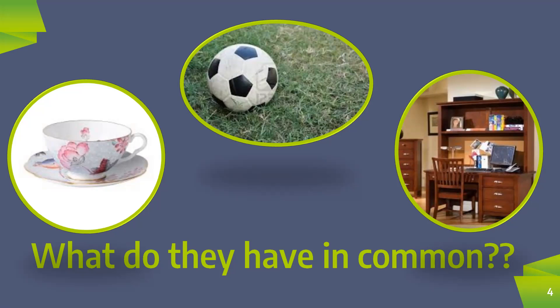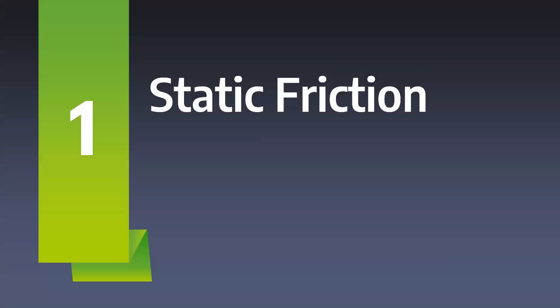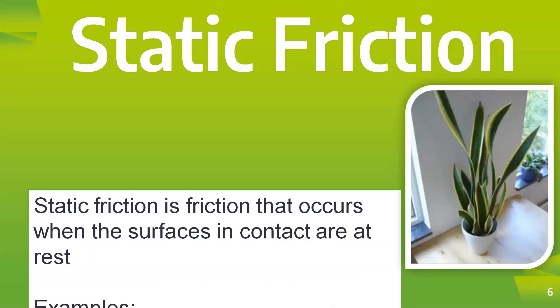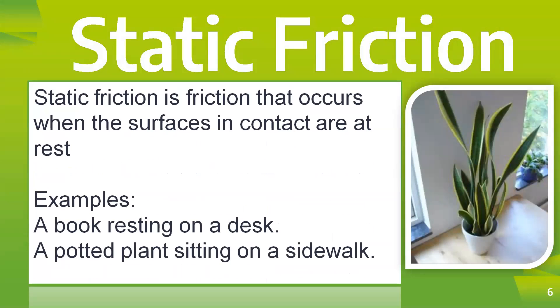Frictional force which comes into play when objects are at rest can be called as static friction. It is the opposite force experienced when objects are at rest on the surface of other objects. Static friction can be seen in many situations. For example, a book resting on a desk, or a potted plant sitting on a sidewalk. You just have a look around you — you'll be able to see many examples where static friction is being experienced.